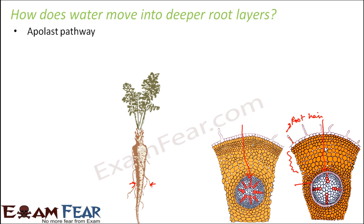Now there are two different pathways by which water can reach up to the endodermis. One is the apoplast pathway and the second one is the symplast pathway. Both of them are two different ways by which water can enter from root hair up to the endodermis. Let us discuss both of these pathways one by one.